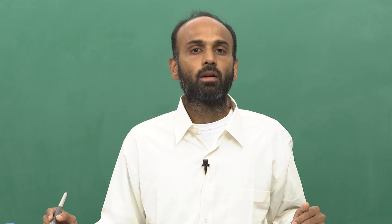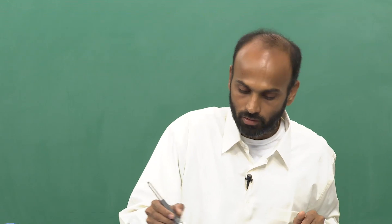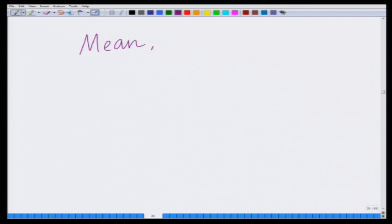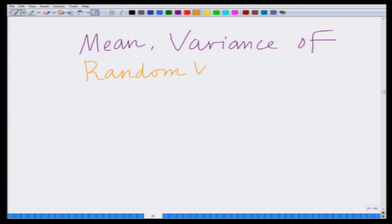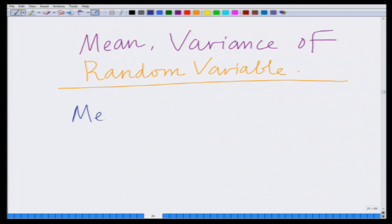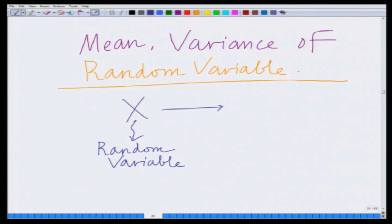Today, let us start looking at two other important parameters associated with any random variable — that is the mean and the variance. In today's lecture we will look at the mean and variance of random variables. The mean — let us say I have a random variable X, this is my random variable which is characterized by the probability density function f sub X of x.